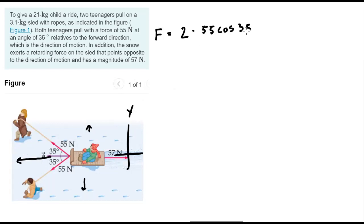But we do have that slowing force, the retarding force here, 57 newtons. The snow is dragging us down. So we would have to subtract that 57 newtons. And if we do this, we should be able to get our net force.